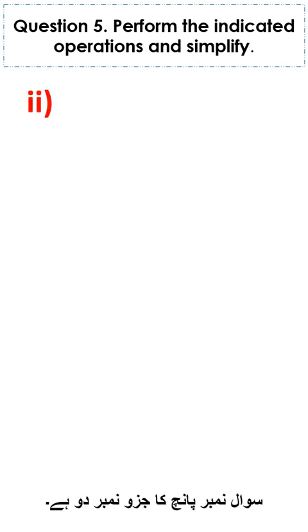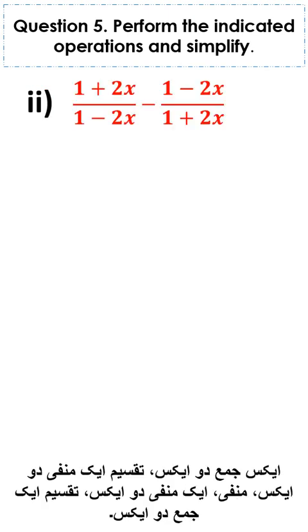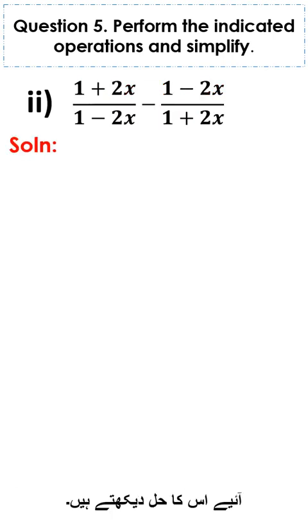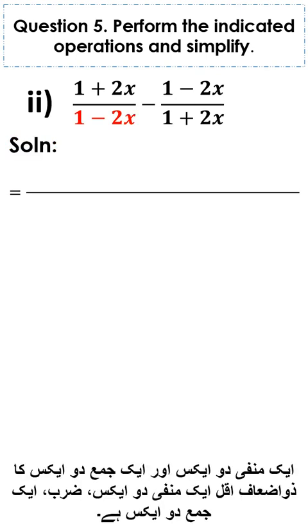Part 2 of question number 5 is 1 plus 2x divided by 1 minus 2x. The solution: the LCM of 1 minus 2x and 1 plus 2x is 1 minus 2x into 1 plus 2x.